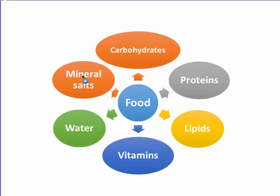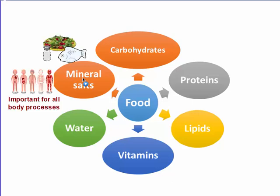Finally, we have mineral salts, which is also a large group. There are many minerals such as sodium, potassium, magnesium, iron, calcium, etc. These mineral salts can be found in various foods, mainly in salt, some vegetables and fruits, and some fish. Like water, mineral salts are important for all body processes, including our nervous system and muscular system.